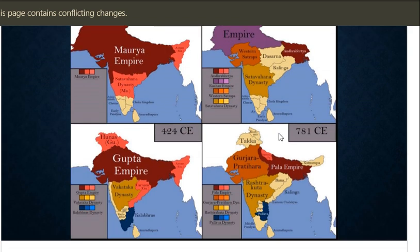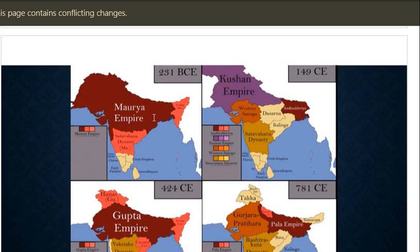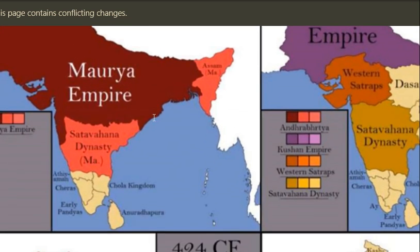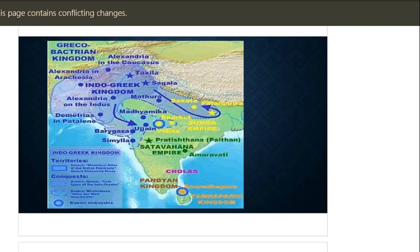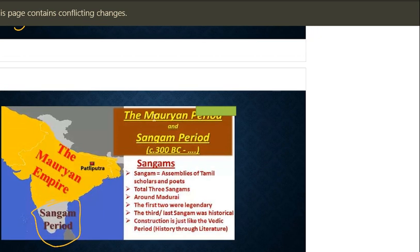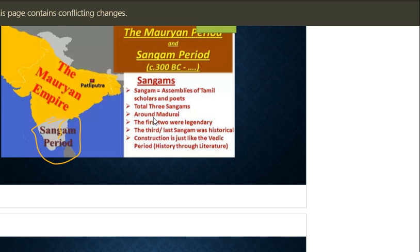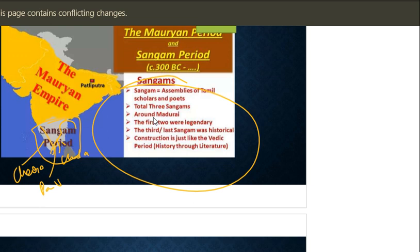Contemporarily with the Mauryan Empire there were three prominent kingdoms in southern India which Ashoka mentions in his inscriptions. If you zoom into the map, you can see the Cholas, Pandyas, and Cheras. This was the period of Sangam literature. While reading about the Sangam period you can learn about the prominent ports of each kingdom - Chola, Pandya, and Chera.